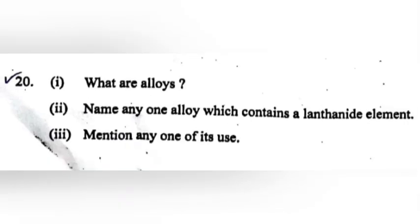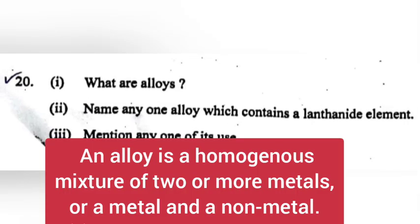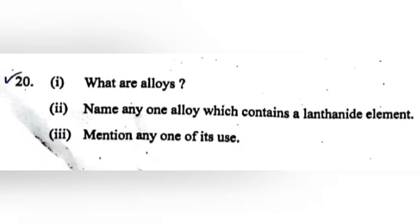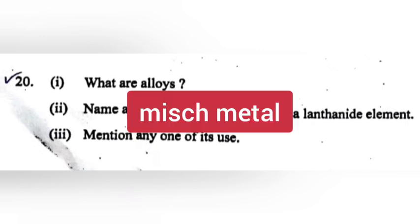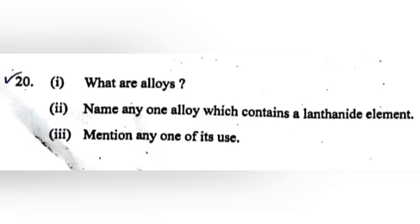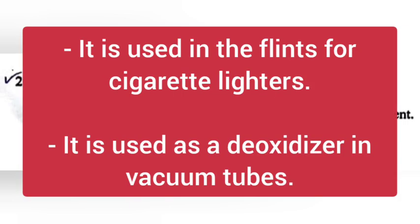Question 21: What are alloys? Answer: An alloy is a homogeneous mixture of two or more metals or a metal and a non-metal. Question 22: Name any one alloy which contains a lanthanide element. Answer: Misch metal. Question 23: Mention any one of its uses. Answer: It is used in flints for cigarette lighters. It is also used as a deoxidizer in vacuum tubes.